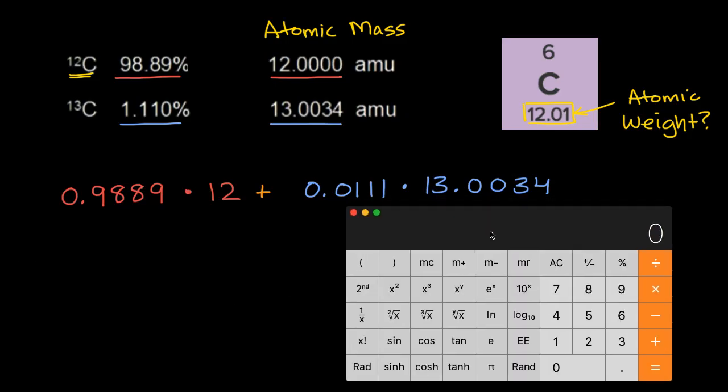So what does that give us? Let's get our calculator out here. So we are going to have 0.9889 times 12 plus 0.0111 times 13.0034. And I know it's going to do this multiplication first, because the calculator knows about order of operations. And so that's all going to be, as you can see, 12.01113774, which if you were to round to the hundredths place, is how this atomic weight was gotten.